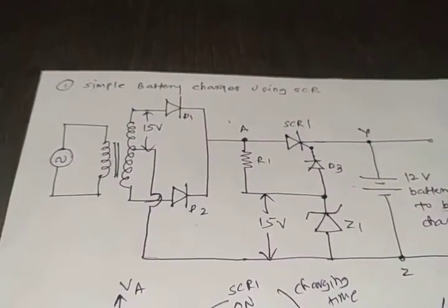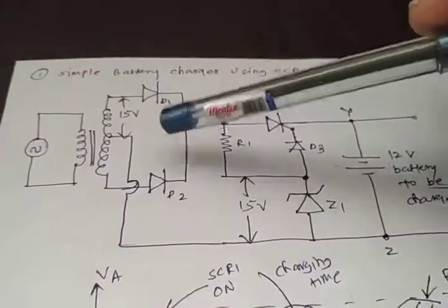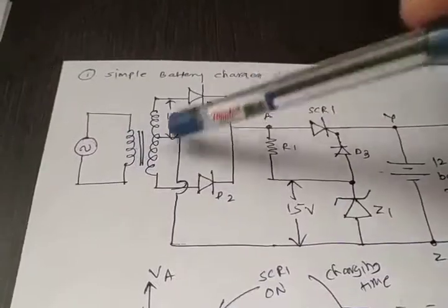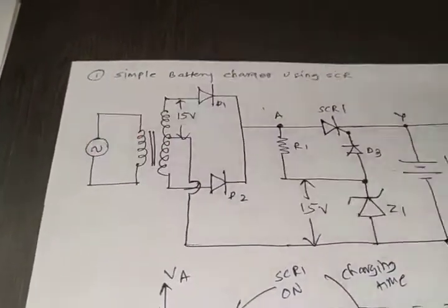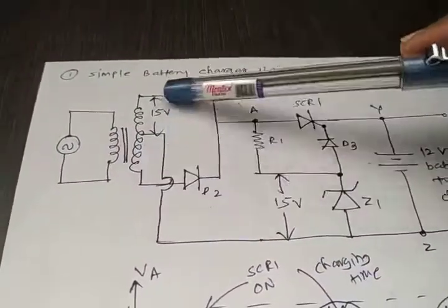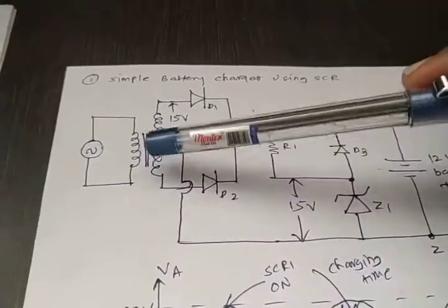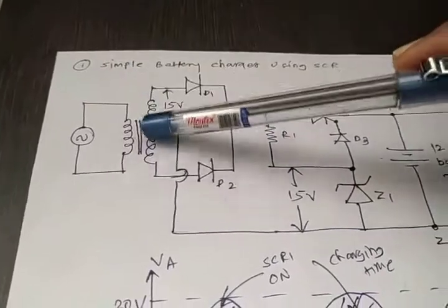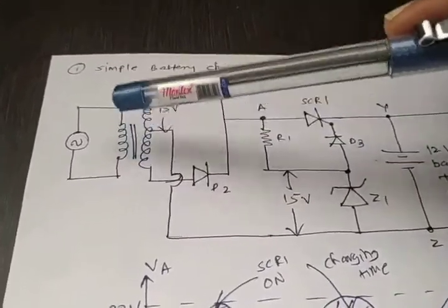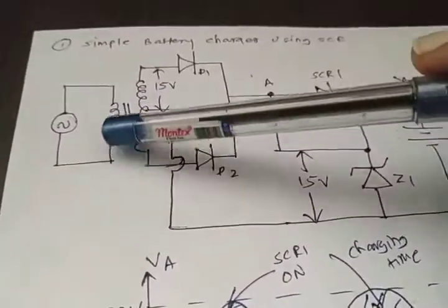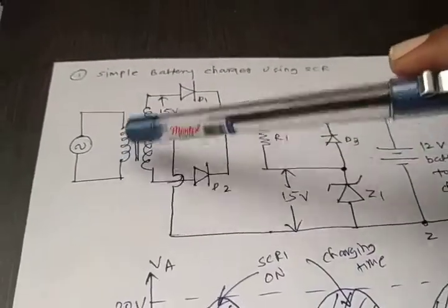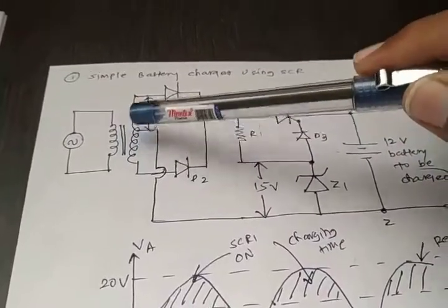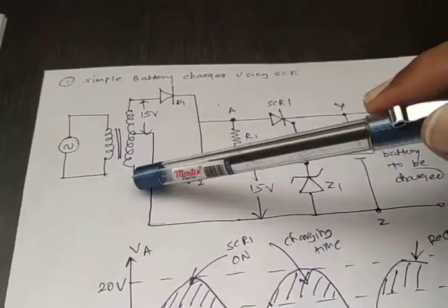This is the simple battery charger circuit. We use one transformer with AC supply provided across it — a simple step-down transformer. Across the primary winding we provide 230 volts, and this primary winding generates 15 volts across the secondary winding.